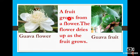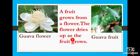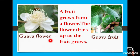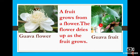Then we learn about how we get the fruit. A fruit grows from a flower. The flower dries up as the fruit grows. Look at here. What flower is this? Guava. G-U-A-V-A. Guava flower. And then from this flower drying up, we get a guava fruit. This is a guava fruit.